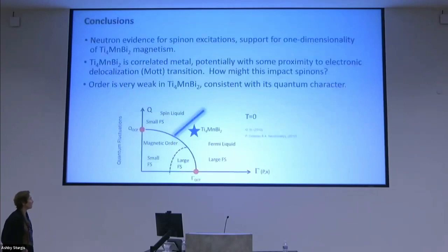With that, I'd like to just put up my conclusions. The neutrons are not inconsistent with the possibility that this is a one-dimensional system with spinon-esque sorts of excitations, that this is a material that is metallic, with the possibility that we have some kind of delocalization, and that was exactly where we wanted to get in order to understand what the spinons would look like in that regime. This is a material which is far from magnetic order with strong fluctuations at all temperatures. I might potentially put titanium-4-manganese-bismuth-2 where I put it on the chart, just outside of the magnetically ordered regime, close to the Fermi surface crossover or transition that you might see in the absence of magnetic order.